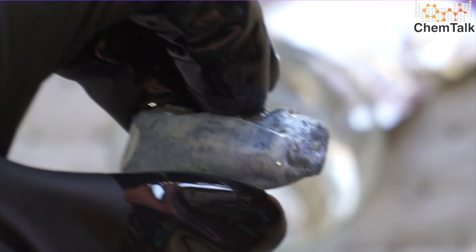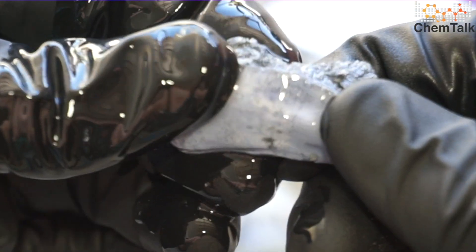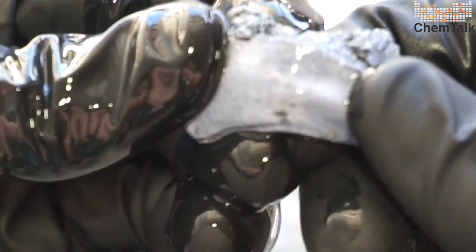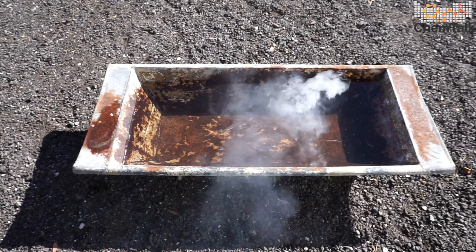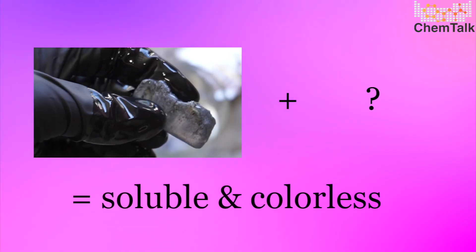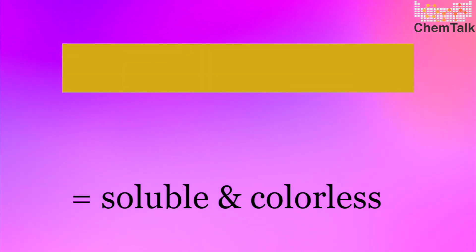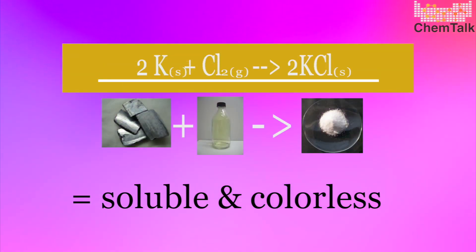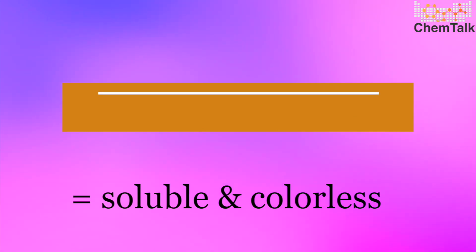Pure potassium is a malleable and waxy metal. It has a low density, is easy to cut, and is one of the most reactive metals, as you will see later in the experiment. When potassium reacts with other elements, it usually forms compounds that are soluble and colorless, like potassium chloride (KCl) and potassium carbonate (K₂CO₃).